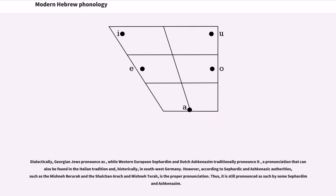Dialectically, Georgian Jews pronounce het as kh, while Western European Sephardim and Dutch Ashkenazim traditionally pronounce it as a velar fricative, a pronunciation that can also be found in the Italian tradition and, historically, in southwest Germany. However, according to Sephardic and Ashkenazic authorities, such as the Mishnah Berurah and the Shulchan Aruch Mishnah Torah, het is the proper pronunciation. Thus, it is still pronounced as such by some Sephardim and Ashkenazim.